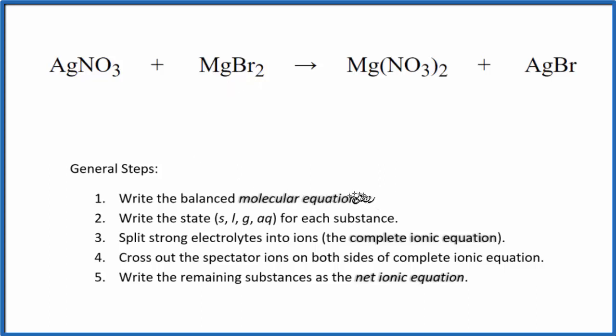First thing we need to do with net ionic equations is balance the molecular equation. So I can see I have two nitrate groups here and only one here. So I'm just going to put a 2 in front of the AgNO3. Now I have two silvers and one, I'll put a 2 here.